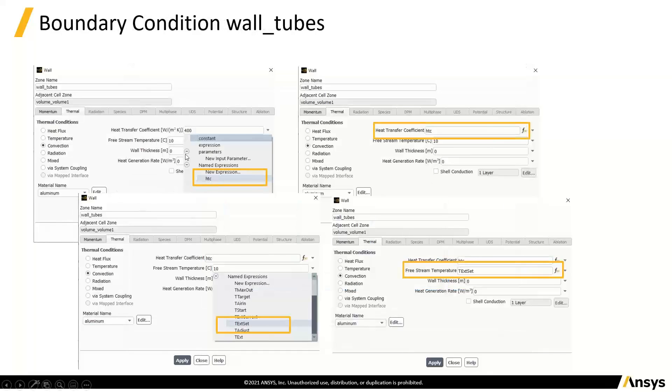We can go in here and put a heat transfer coefficient in here rather than the number so that we're actually using the expression that we've got. We can put free stream temperature that we're going to calculate in here in this convective boundary condition on that wall.